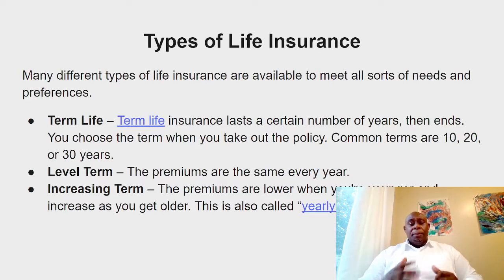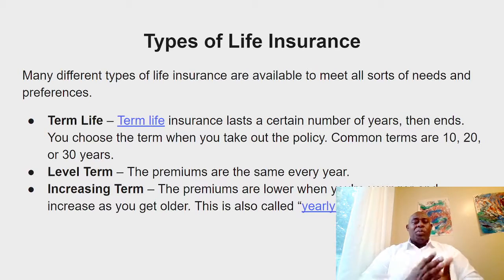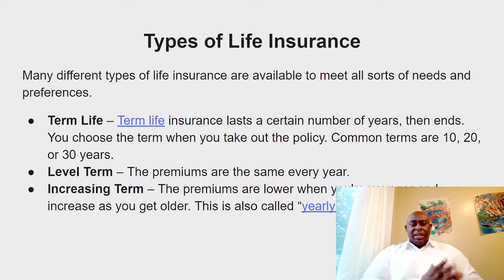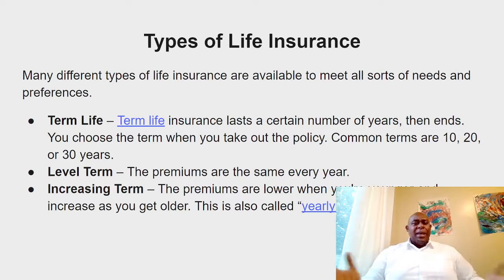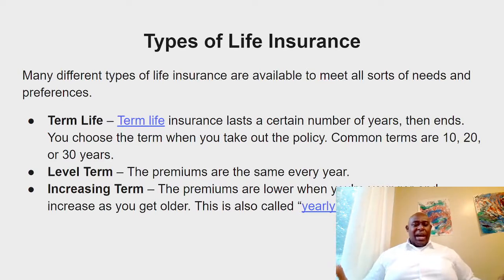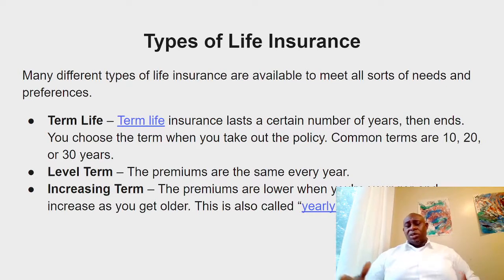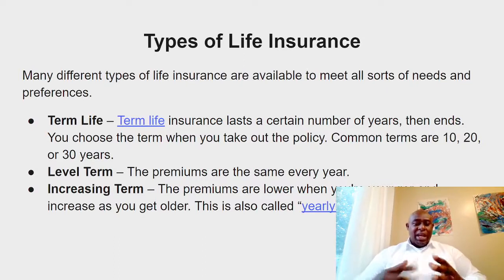Level term is when you pay the same premium consistently every year for that 10, 20, or 30 years — nonstop for that specific amount. For example, a million-dollar policy might cost around $250 per month, and that stays the same for the entire term.